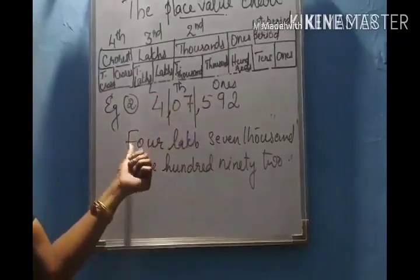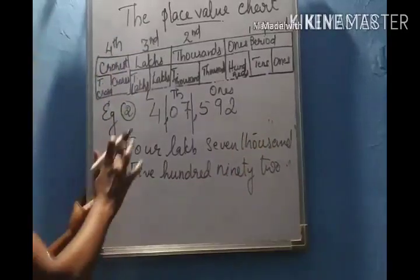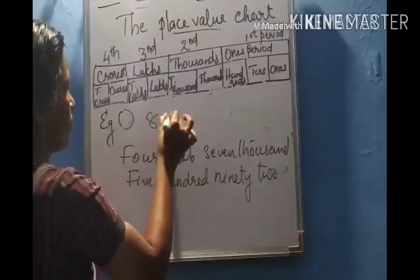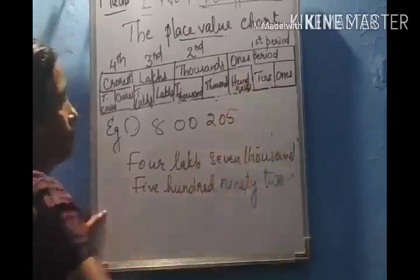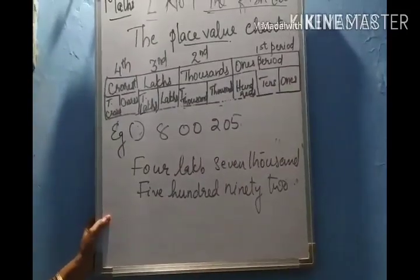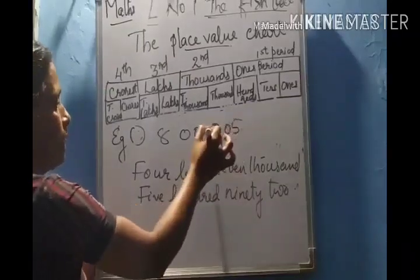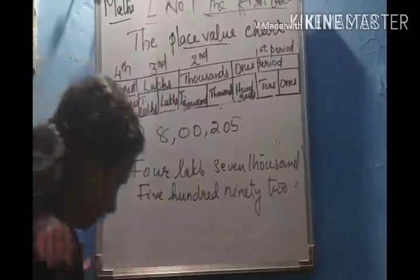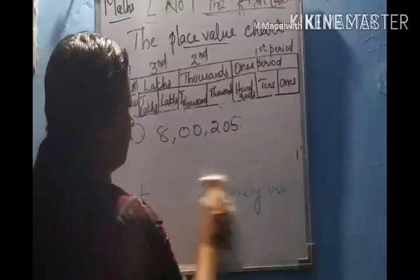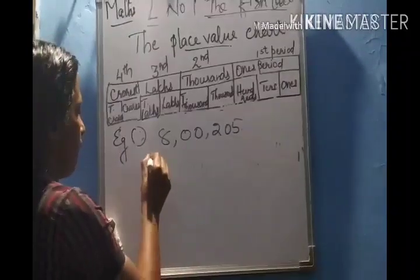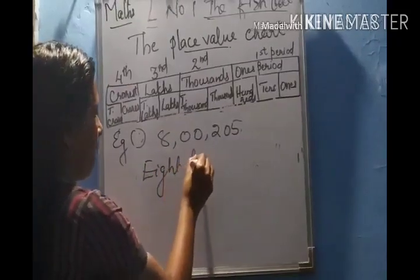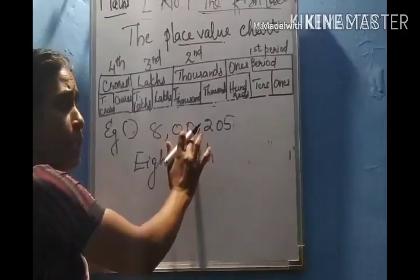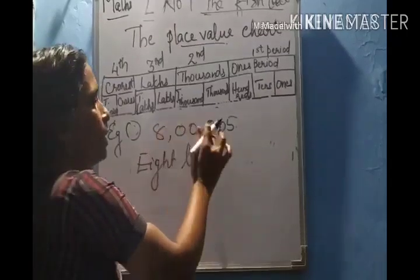So the given number is four lakhs, seven thousand, five hundred and ninety-two. Now the next example — you try to read it. First you have to place the comma. First comma comes after three digits of the ones period, second comma comes after the thousands period. So it will be eight lakhs. The digits in the thousands period are zero, so we are not going to read zero. We will write only eight lakhs, two hundred and five.